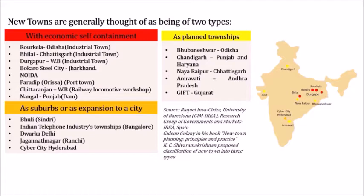Classifying new towns in India, we see towns with economic self-containment: industrial towns, port towns, or towns related to dams or railway workshops. Examples include Rourkela, Bhilai, Durgapur, Bokaro Steel City, and NOIDA as industrial towns; Paradip as a port town; Chittaranjan in West Bengal as a railway locomotive workshop town; and Nangal, which came up because of a dam.